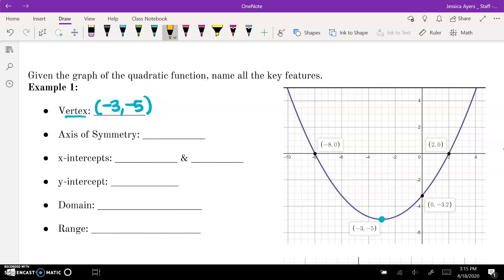The axis of symmetry will be the vertical line that goes through that vertex. Since it's a vertical line, we know we need to write an equation as x equals, and then whatever the x value of the vertex is. When we want to look at the x-intercepts, we're looking at where our graph is on the x-axis. So there's two for this particular graph. So it's negative eight, zero, and two, zero.